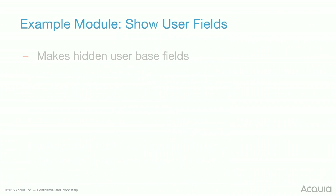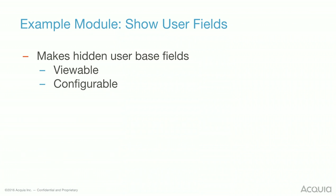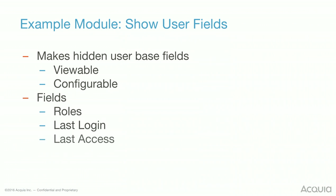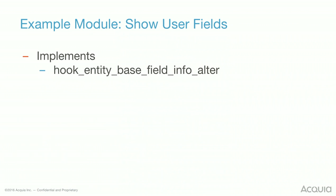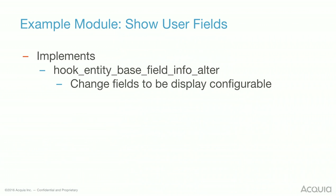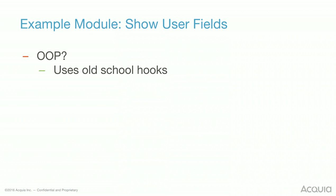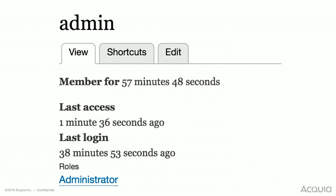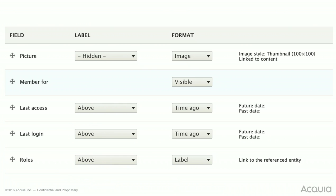Another example module: 'Show User Fields.' This makes hidden user base fields viewable and configurable. We have certain fields on the user that are not viewable and not configurable in the form - things like roles, last login, last access. On manage display, you don't have the ability to move those around and display them how you want. This module implements hook_entity_base_field_info_alter and changes those fields to be display configurable. So on a user page, we would have last access and last login just like any other field we add - and we now see them on manage display.